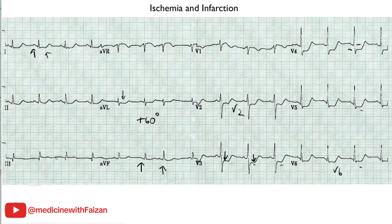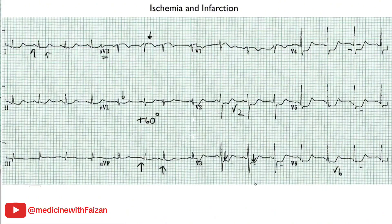The ST segments are isoelectric in the inferior leads. You see ST elevation in AVR — you cannot have an infarction in AVR, so this is simply a reciprocal change. We would call this ischemic changes in the anterior lateral leads, almost always due to significant coronary artery disease, probably in the LAD distribution because it is affecting the anterior lateral region. During cardiac catheterization you would likely find severe atherosclerosis in that region of the coronary artery tree.